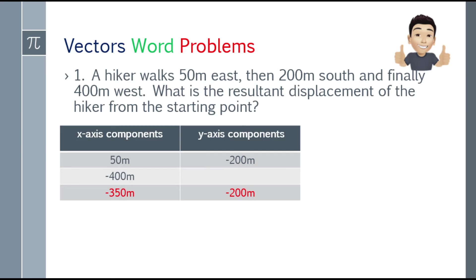On the x-axis you have 50 meters and negative 400 meters (since 400 meters west is negated). For the y-axis, you only have negative 200 meters. Next, get the sum of x and y components. 50 plus negative 400 equals negative 350. And on the y-axis, that will be negative 200. So negative 350 means 350 meters to the west, and negative 200 means 200 meters to the south.